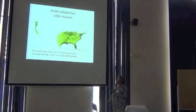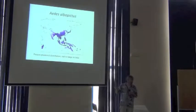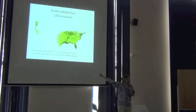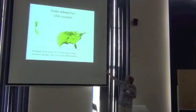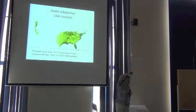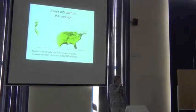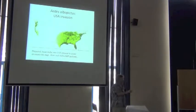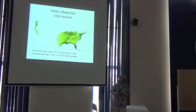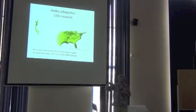So I'm going to take that niche model and simply transfer it to North America. So notice that there are no occurrence points on this map. All this map is, is using the rules that we decided on in terms of environment, the correlations between occurrence and climate that we decided on in Southeast Asia, and we transfer them to North America.